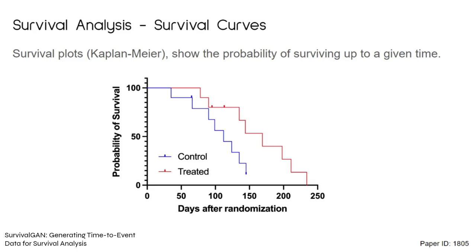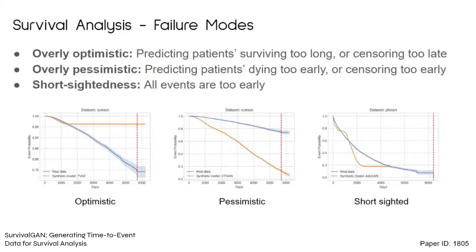One further key element of survival analysis is survival curves, also known as Kaplan-Meier plots, which show the probability of surviving up to a given time. We use these Kaplan-Meier curves to demonstrate failure modes. When generating synthetic survival data, we saw three common failure modes: being overly optimistic, where the orange synthetic survival curve doesn't decrease fast enough compared to the blue real curve; overly pessimistic, the opposite, where the orange curve decreases too fast; or short-sighted, where all events are just too early and the orange curve simply ends too early compared to the blue curve.